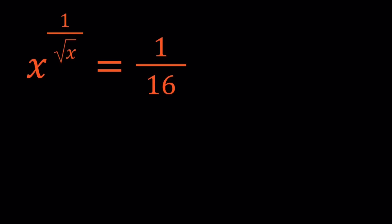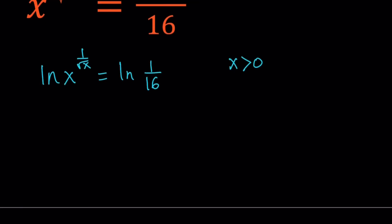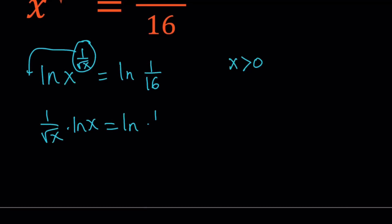You can definitely guess and check for a problem like this, but let's make it a little easier. I'm going to go ahead and ln both sides — ln is the natural logarithm. So ln of x to the power 1 over square root of x equals ln of 1 over 16. Notice that x needs to be positive. Now we're going to move this number to the front by using properties of logs: 1 over square root of x times ln x equals ln 1 over 16.